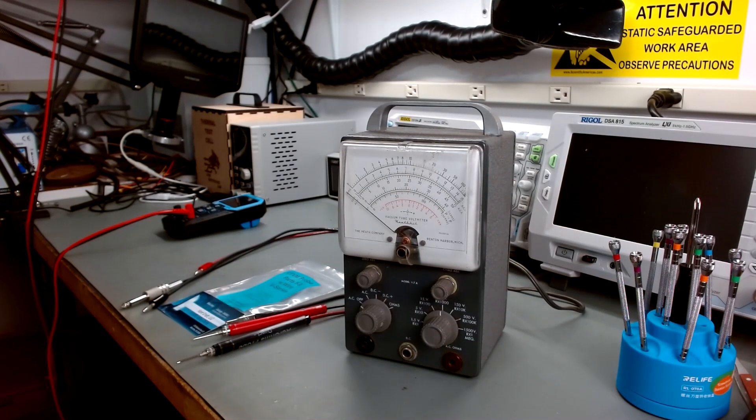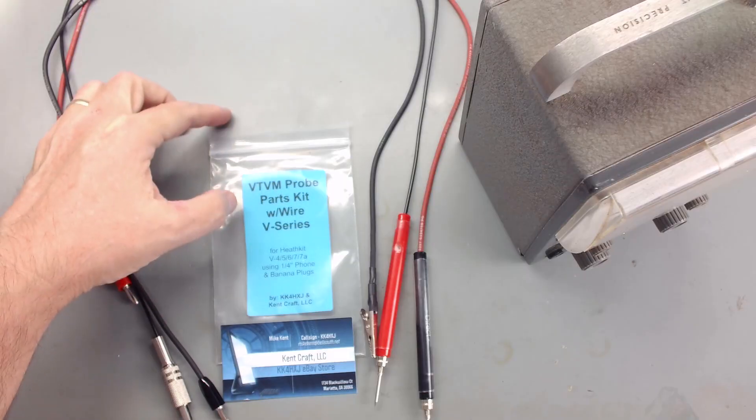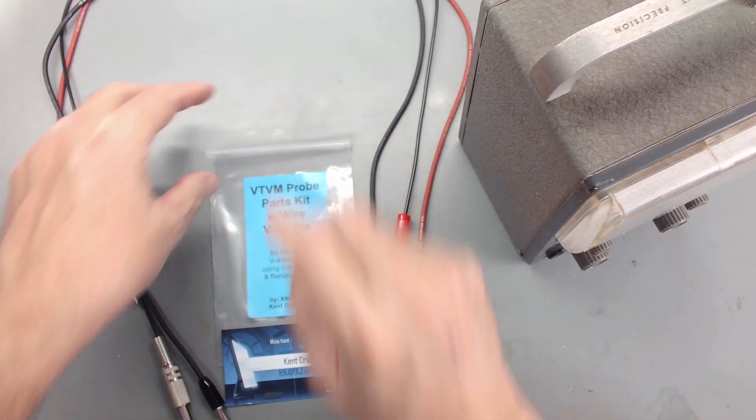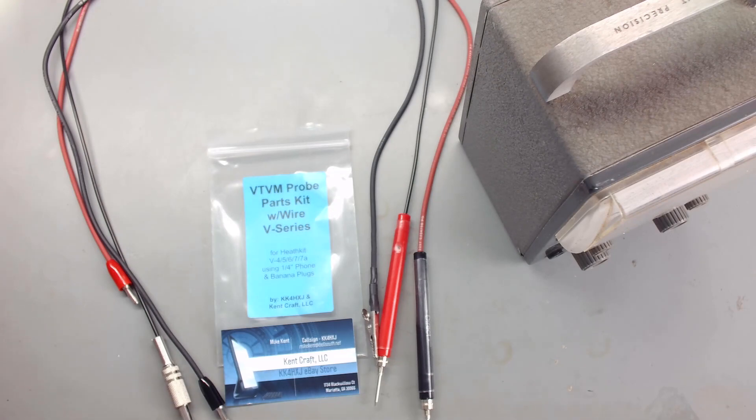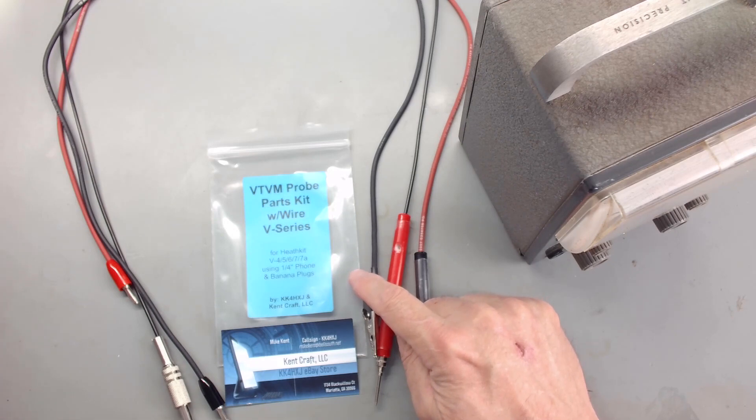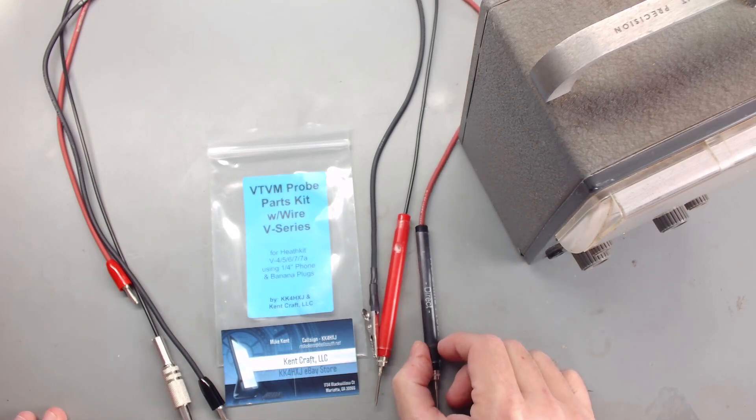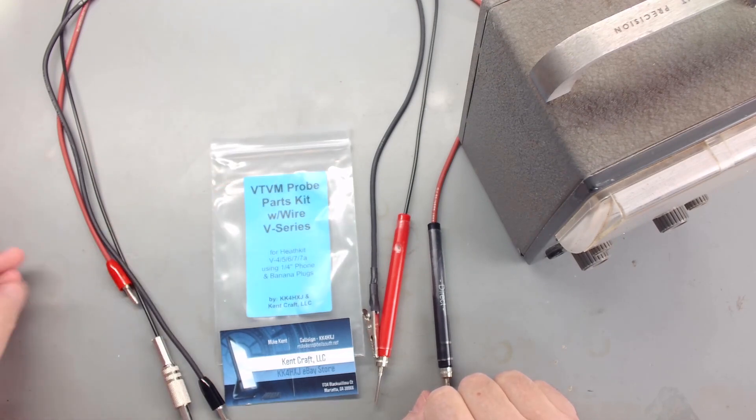Now, one thing it did is it did not have any probes with it. So I ordered a kit and I thought I would show you in case you decide that you need a set of probes for a V7A or one of the six or the seven or the five ones that use these particular probes. This is the kit I bought, you assemble it. I went ahead and assembled it, I didn't do it on camera. It's a VTVM probe parts kit with wire V series for Heathkit for the four, five, six, seven, 7A uses the one quarter inch phono and the banana plugs.